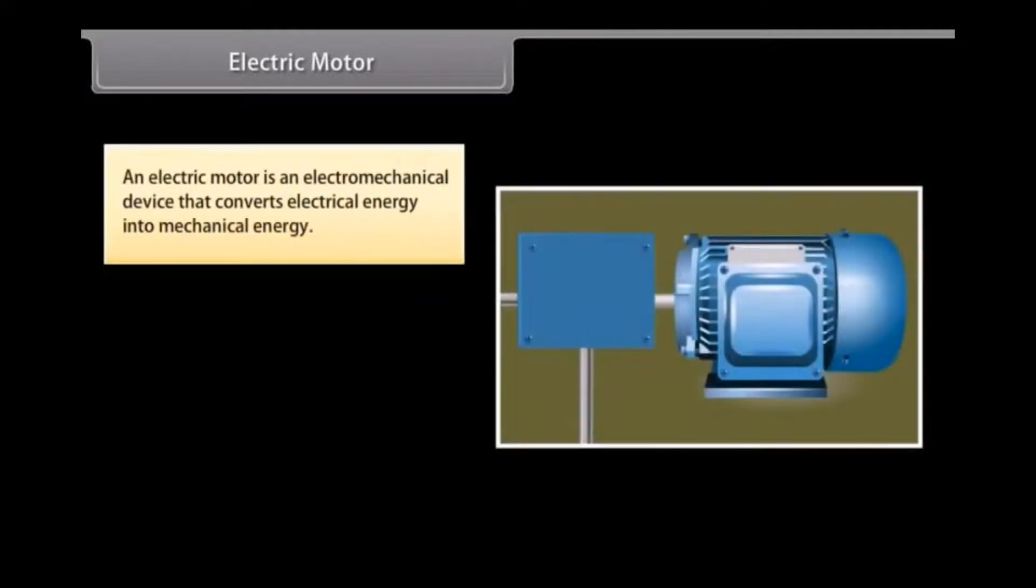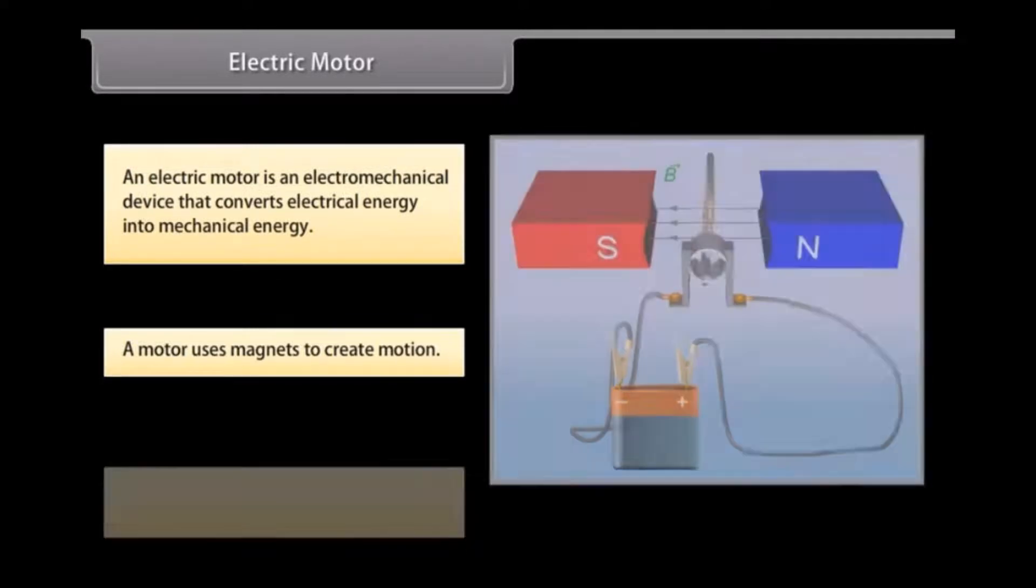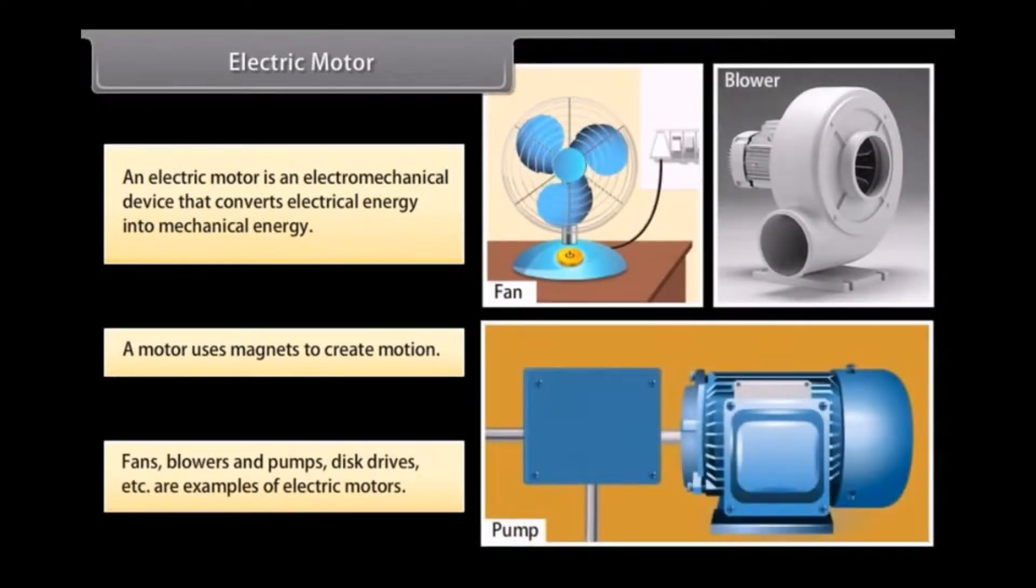Electric Motor. An electric motor is an electromagnetal device. It converts electrical energy into mechanical energy. Let us look at how electric motors work. A motor uses magnets to create motion. Inside an electric motor, the attracting and repelling forces of a magnet create rotational motion. Fans, blowers and pumps, disc drivers, etc. are some examples of electric motors.